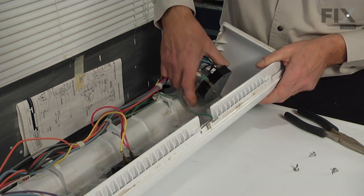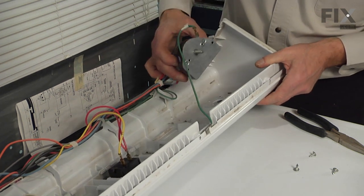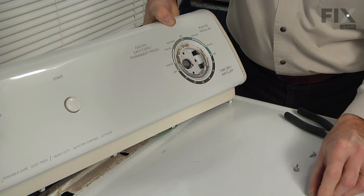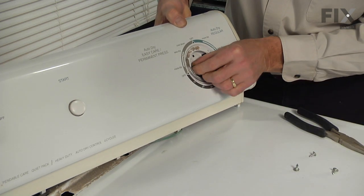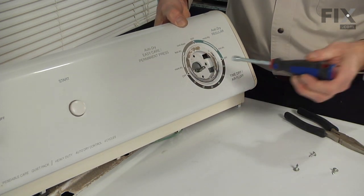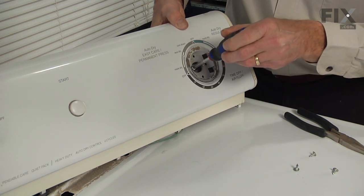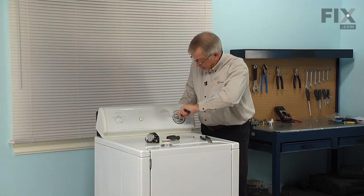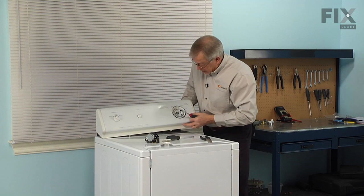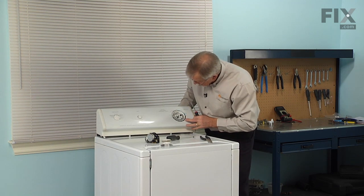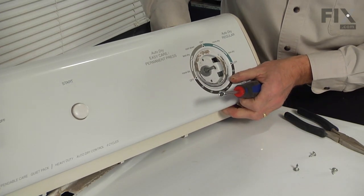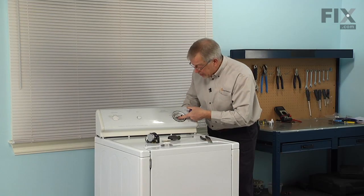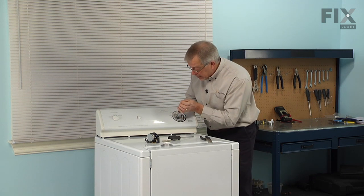Check and make sure all those connections are nice and tight. Then we can place the timer into the opening and we'll line up the two holes for the screws. We'll start by putting one of the screws in first and then carefully rotate the timer to line up the second one and make sure that we have that shaft lined up in the center top to bottom in that opening.